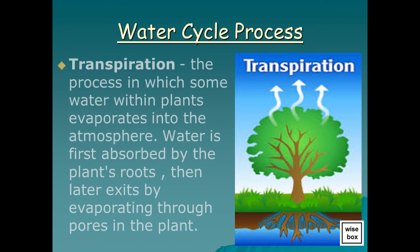Transpiration is the process in which some water within plants evaporates into the atmosphere. Water is first absorbed by the plant's roots, then later exits by evaporating through pores in the plant.